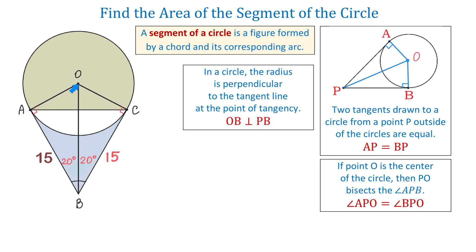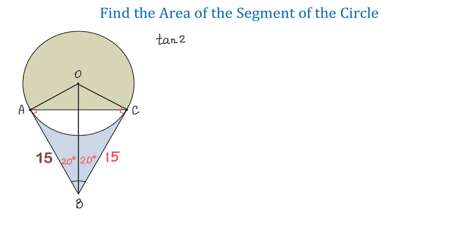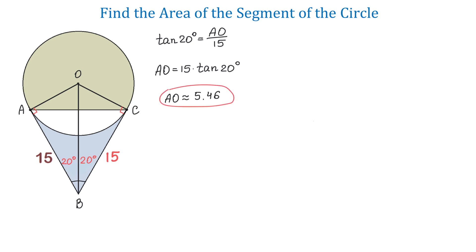In the right triangle AOB, we can use trigonometric functions to find the radius AO. We know the angle of 20 degrees and the adjacent side of 15 units. To find the opposite side, we use the tangent function: tangent of 20 degrees equals AO divided by 15 units. Therefore, AO, which is the radius, equals 15 times tangent of 20 degrees, which is approximately 5.46 units.